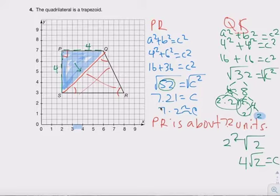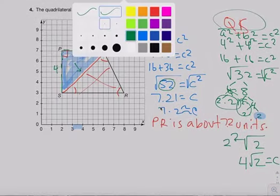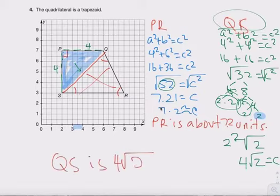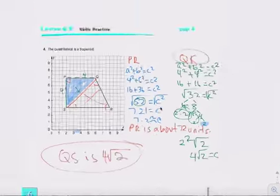That's the distance of Q-S. QS is 4 radical 2. We're exact — we didn't round. This is exact.